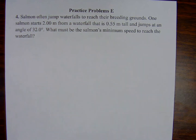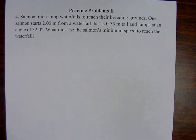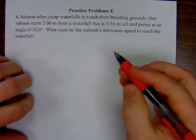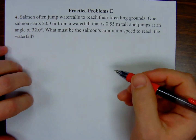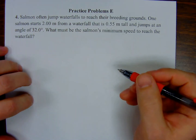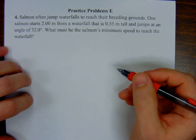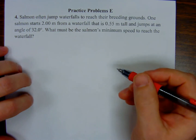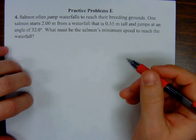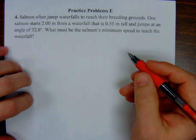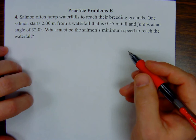Alright, let's take a shot at practice problem 4, associated with sample problem E. Now this one's going to be a doozy. So let's wrap in with a problem setup: salmon often jump waterfalls to reach their breeding grounds. One salmon starts 2.00 meters from a waterfall that is 0.55 meters tall and jumps at an angle of 32.0 degrees. What must be the salmon's minimum speed to reach the waterfall?